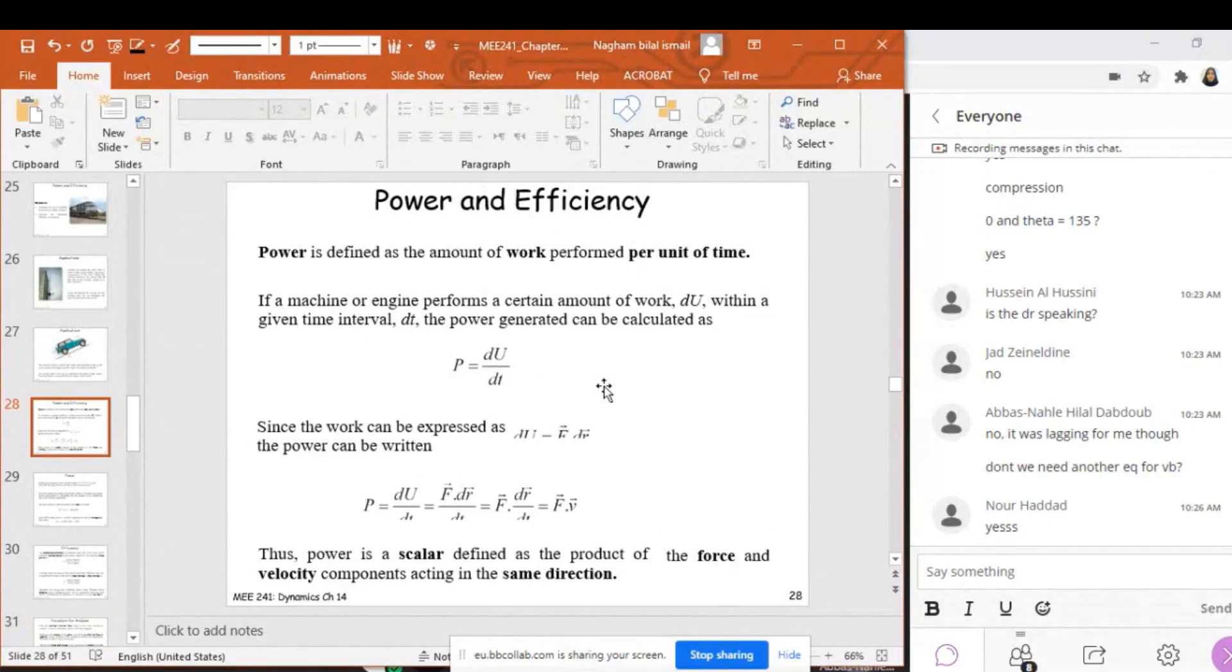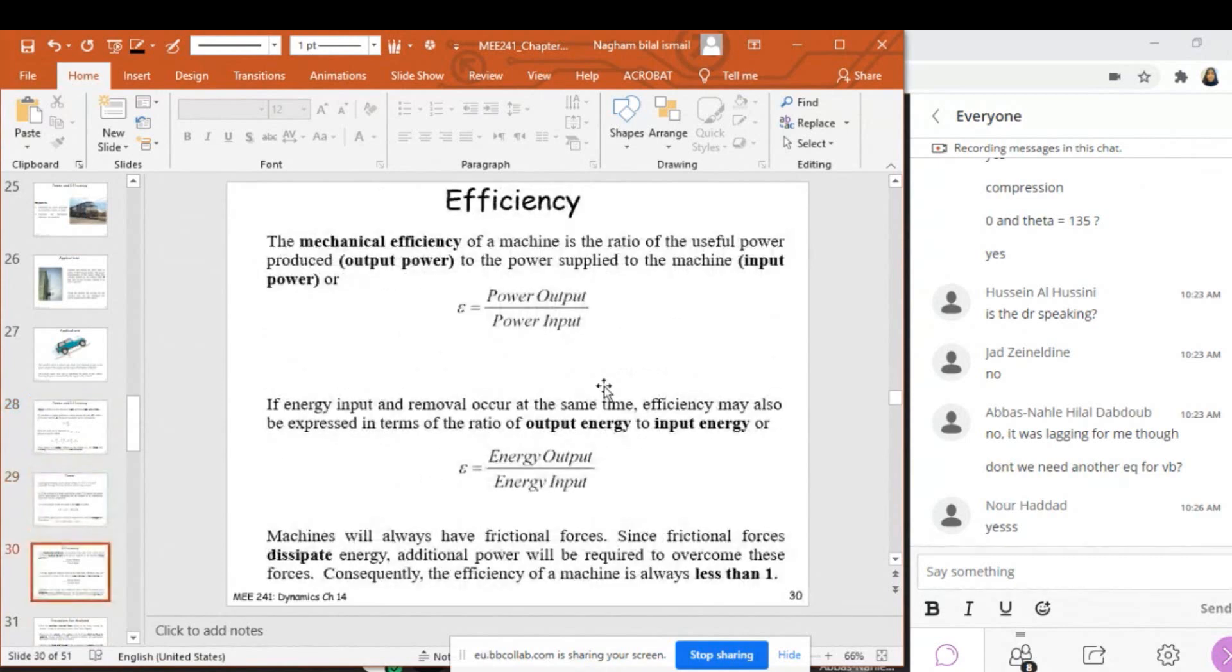As I said in the previous video lectures, power is the scalar product between the force and the velocity. The efficiency is equal to the output power over the input power—there will be some losses in power. It's also equal to the energy output over energy input because they appear at the same time.